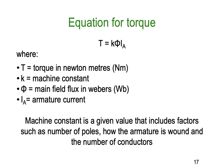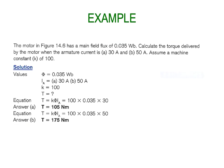The machine constant k is a value that includes factors such as the number of motor poles, how the armature is wound, and the number of conductors — it's built into the manufacturing process and is always a given. Example: The motor from figure 14.6 has a main field flux of 0.035 webers. Calculate the torque when the armature current is (a) 30 amps and (b) 50 amps, assuming a machine constant of 100.